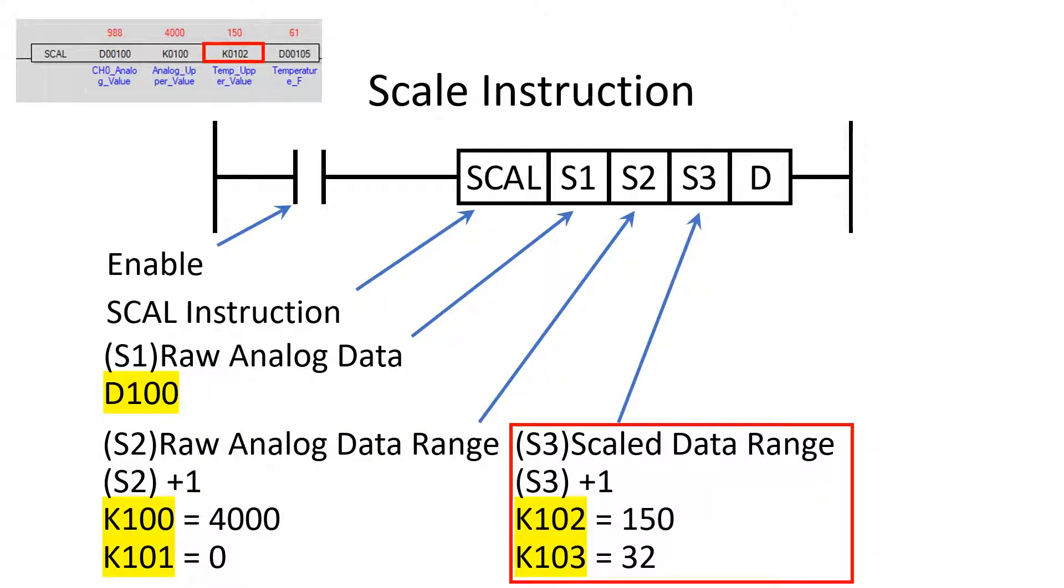The S3 operand stores the scaled range of the analog device. In this program, the scaled range is 32 to 150 degrees with a 1 degree resolution. S3 uses two memory locations just as S2. In this program, it is K102 and K103 as shown.